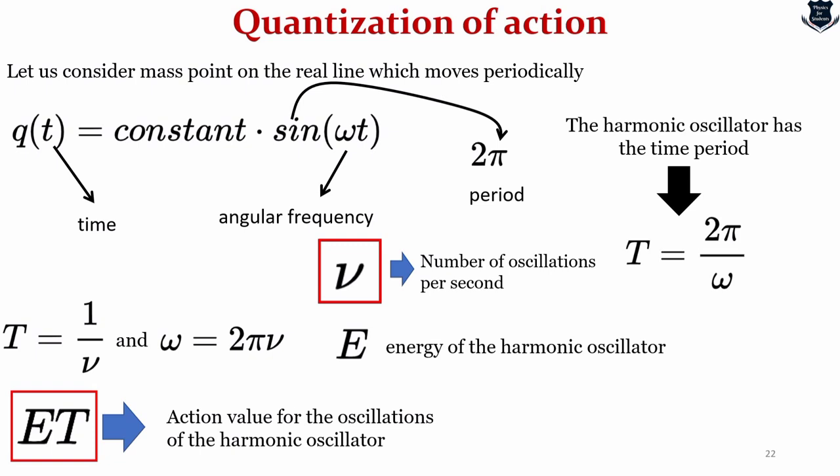Now if E denotes the energy of the harmonic oscillator, then the product Et is a typical action value for the oscillations of the harmonic oscillator. So what we can deduce from here? Something very important. According to Planck's quantization of action, it seems quite natural to find that Et equals nh for n equals 0, 1, 2, and so on. You see what we have done is we've taken a mass point and tried to deduce the action value of the oscillations of the harmonic oscillator using Planck's formula.